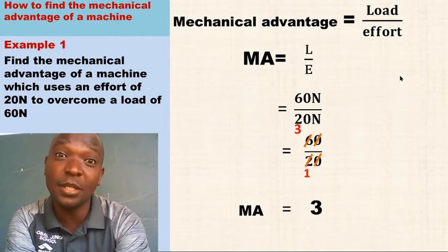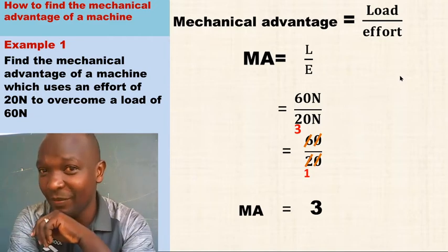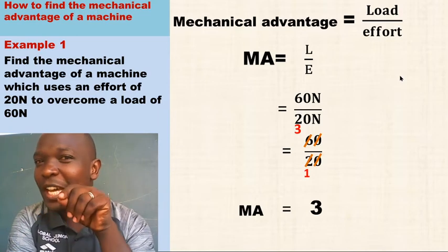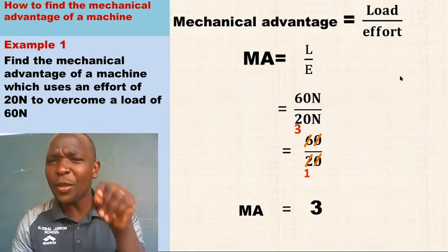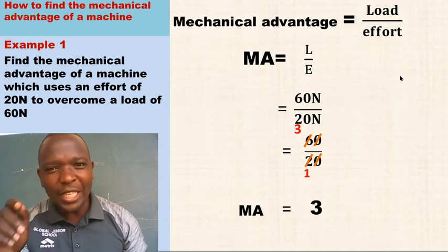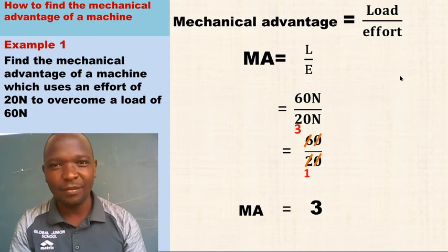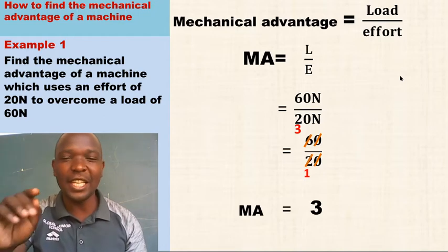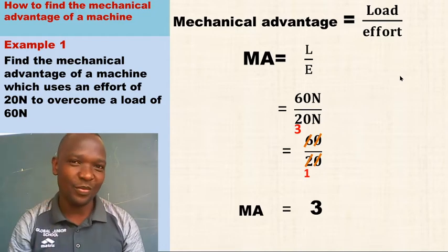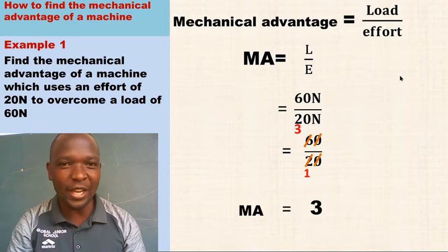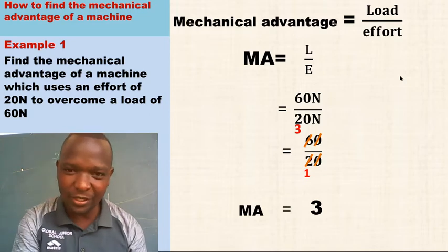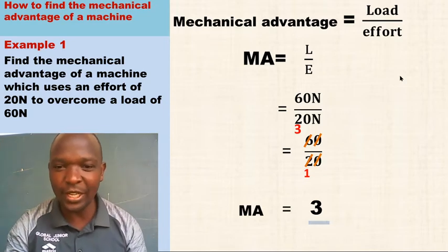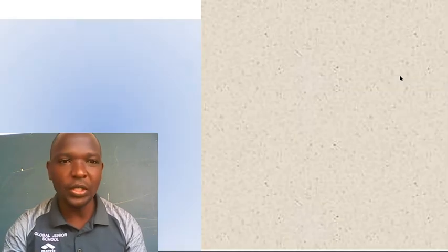Is there any mistake in the answer? The reason we are not putting units is that from the beginning we said mechanical advantage is expressed as a ratio — that is why it has no units. Our final answer is: Mechanical Advantage equals 3. Let's try example two.